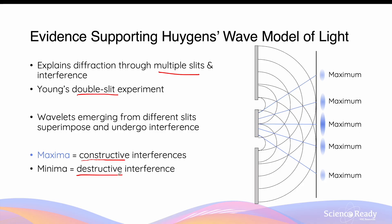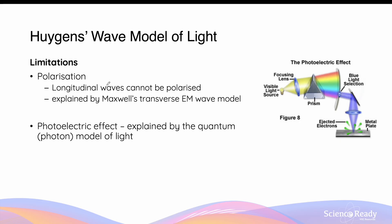More detail on the double slit experiment by Thomas Young is covered in the video on diffraction. Although Huygens' model was able to explain reflection, refraction, and diffraction, there were phenomena it could not explain. First, longitudinal waves cannot be polarized, so Huygens' theory on wavelets could not explain why light can be polarized, which is discussed further in its own video. Second, Huygens' model could not explain the observations made in the photoelectric effect experiments, which will also be discussed in more detail in its own video.